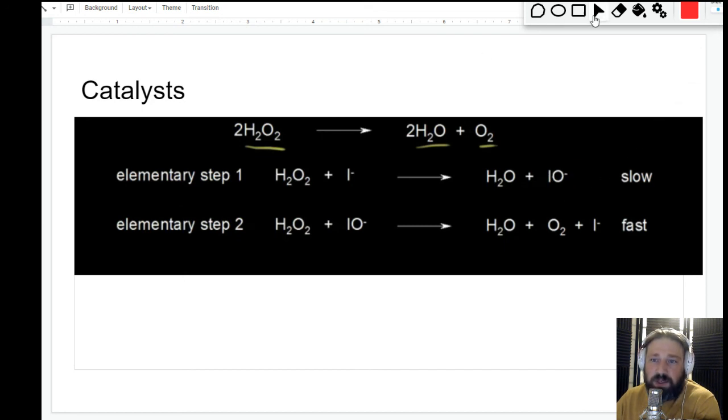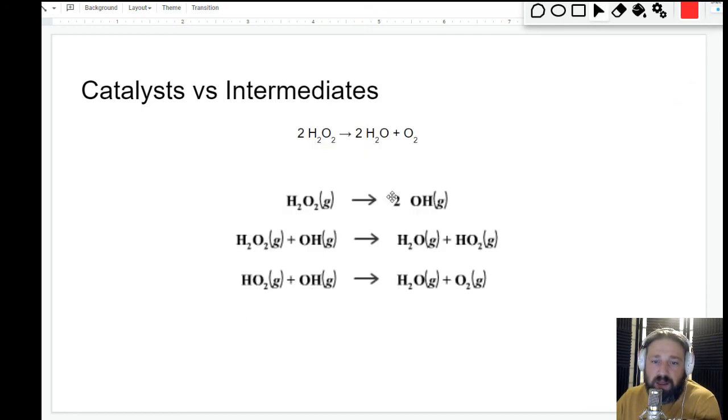We're moving electrons around making a more stable complex. Hypo-iodide is probably a much more stable intermediate than, like, OH gas or this—HO2—this looks crazy.